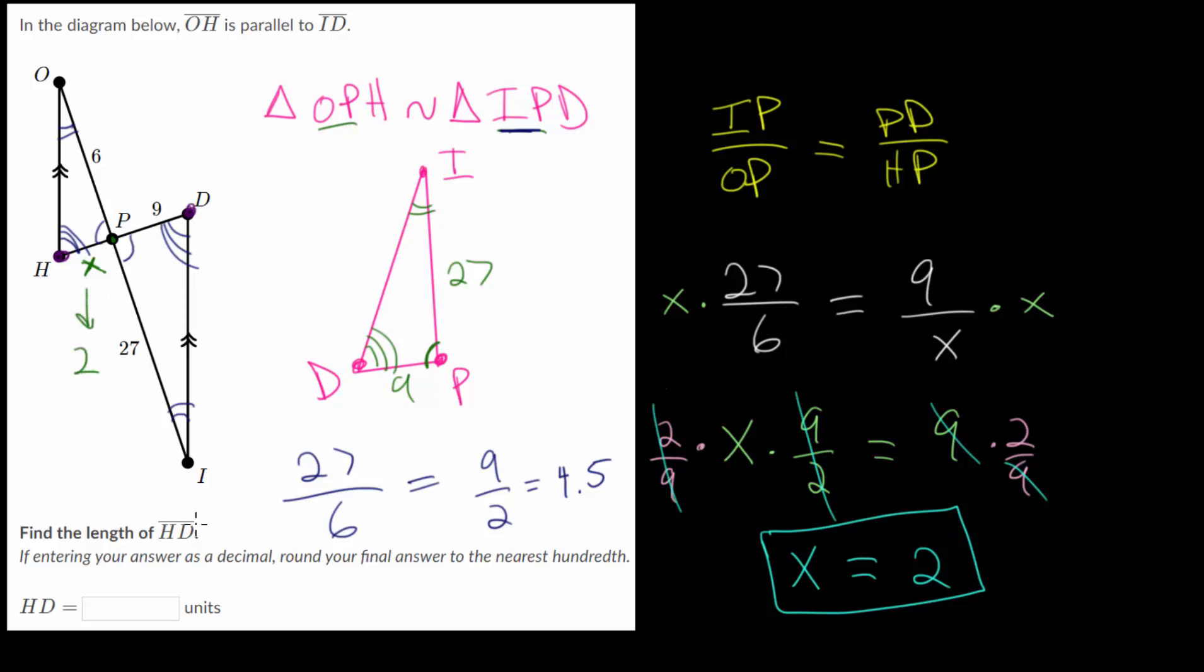And now that we know what X is equal to, since this is 2, and we need to find the length of HD, we know HD is really just HP plus PD. And HP is 2, PD is 9, which means that HD is simply 11. And we can put that into our box here that HD is 11 units.